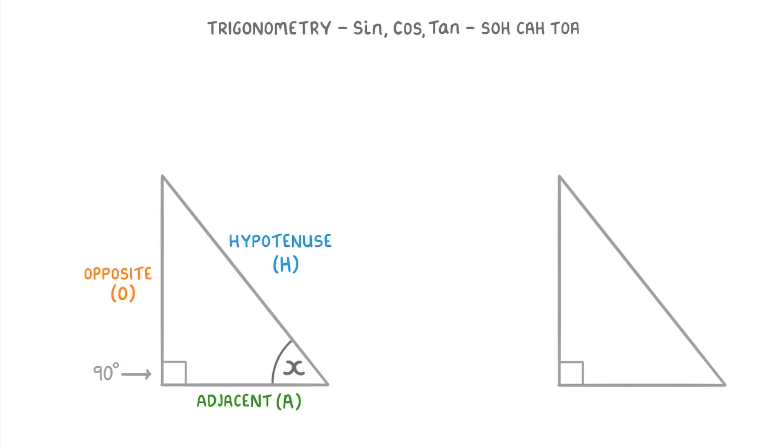On the other hand, if we had this other triangle and we were interested in finding this top angle instead, then the longest side will still be the hypotenuse, as always. But this bottom side would be the opposite, O, because it's opposite the angle we're trying to find. And then this left side would be the adjacent.